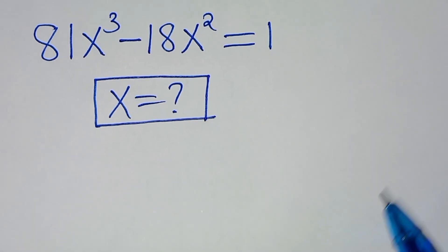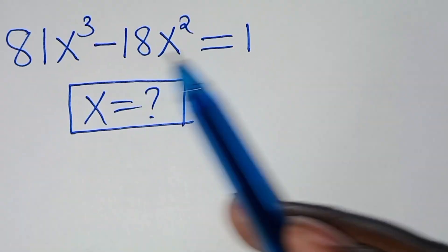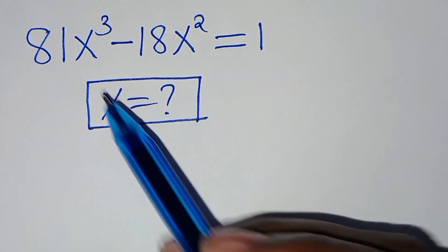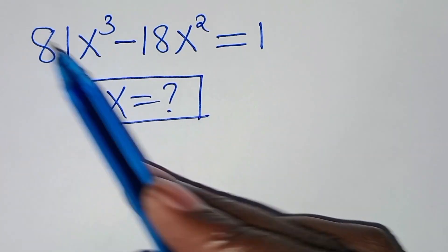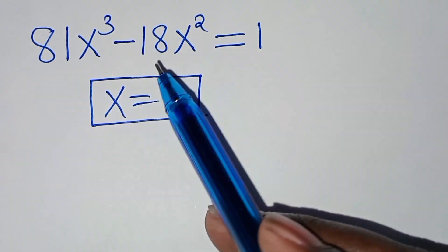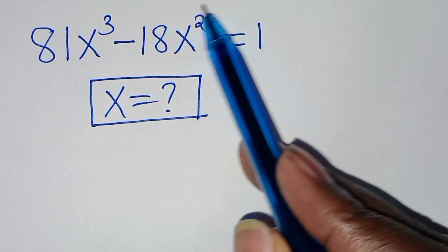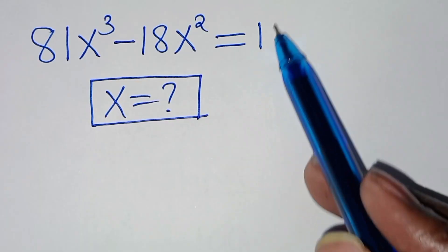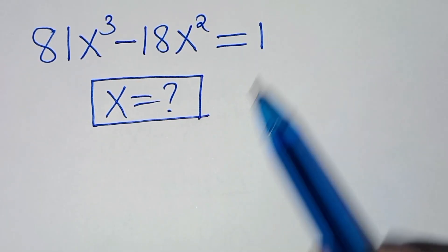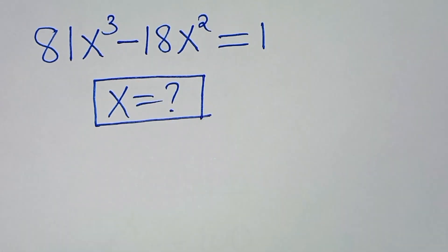Hello everyone, you are welcome to solve this nice algebra problem, which is 81x³ minus 18x² equals 1. What are the values of x?